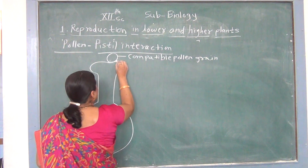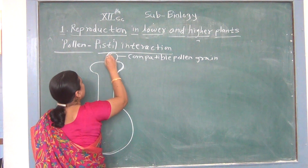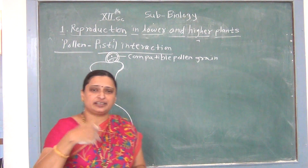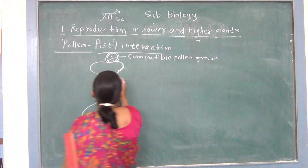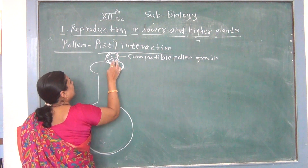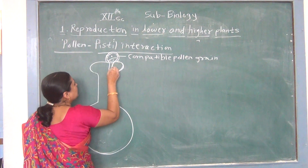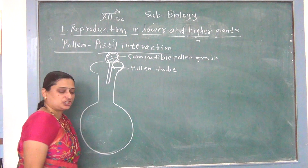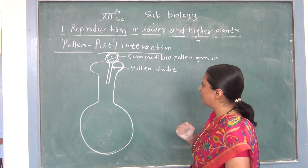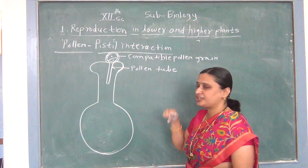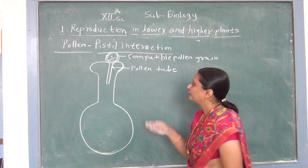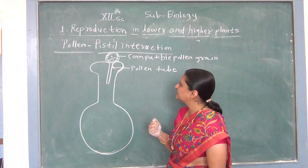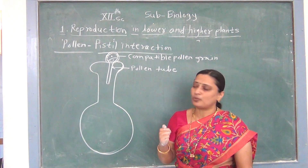When the compatible pollen grain is accepted by the stigma, the stigma contains water and a sugary substance which is absorbed by the pollen grain. Hence, the cytoplasm content of the pollen grain increases. Such pressure is created on one of the germ pores, and the intine comes out from one of the germ pores, which is called a pollen tube. The pollen grain, whether 2-celled or 3-celled, when the right compatible pollen grain is deposited, the stigma accepts it, water and sugary substance are absorbed, cytoplasm content increases, pressure builds, and a pollen tube emerges.